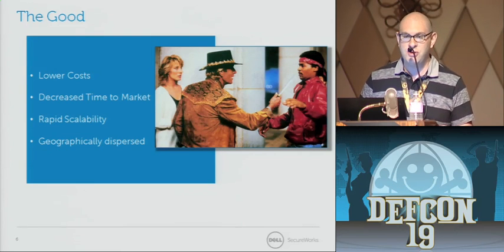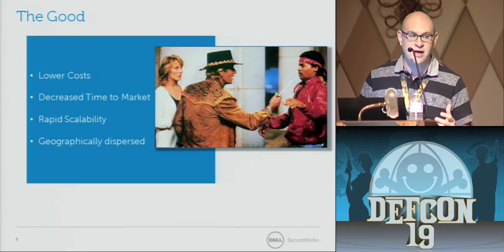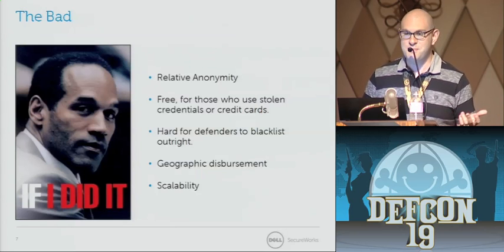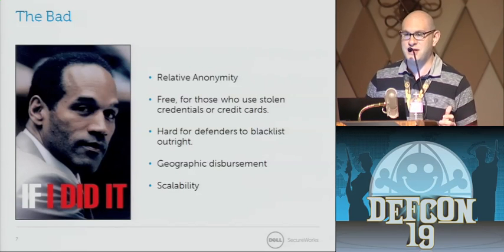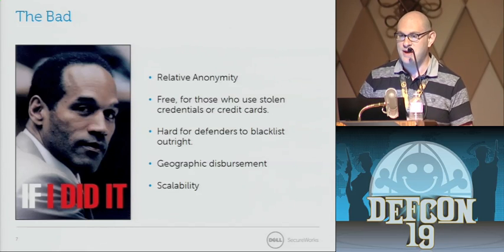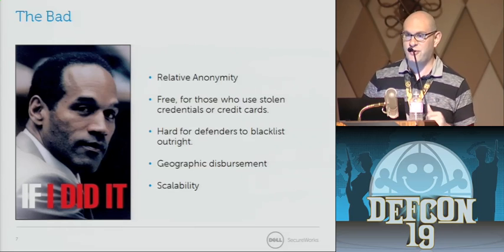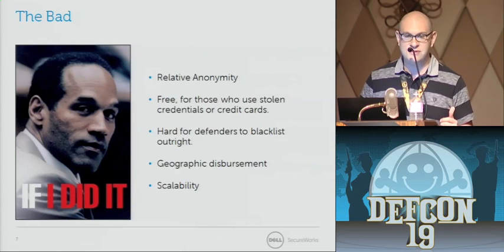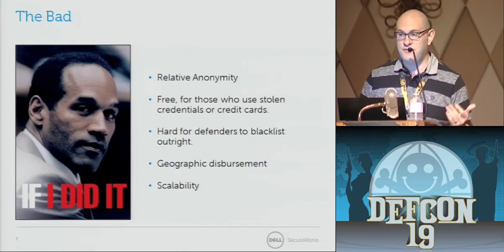There are obviously some good uses for the cloud — like Crocodile Dundee and his knife. There are lower costs, decreased time to market, and the ability to rapidly scale out infrastructure without purchasing data centers, hardware, servers, and storage. You can also inexpensively get geographically diverse infrastructure by using cloud services such as Amazon's.